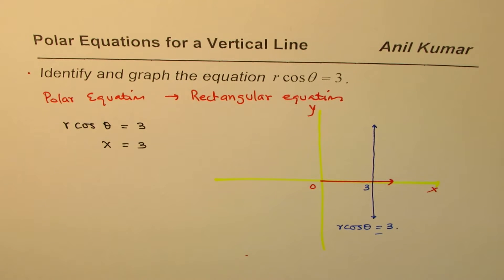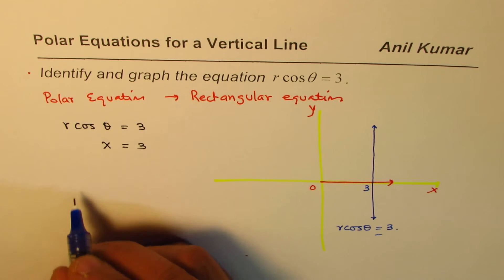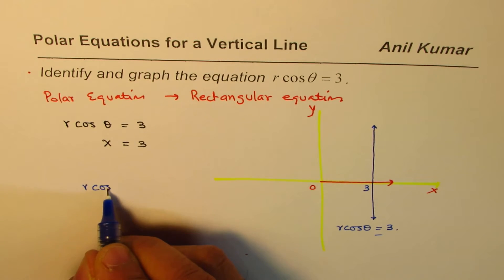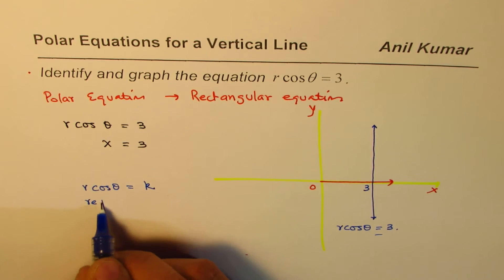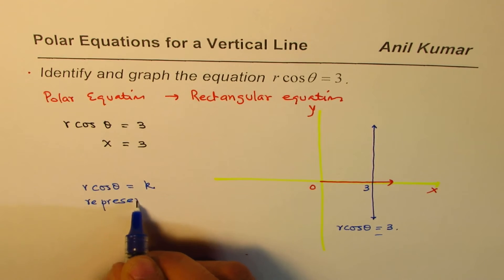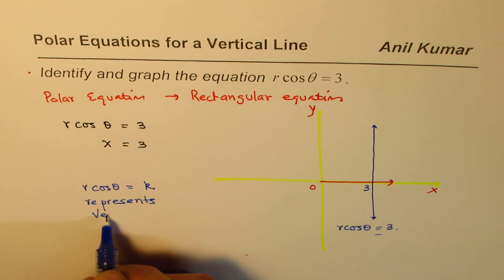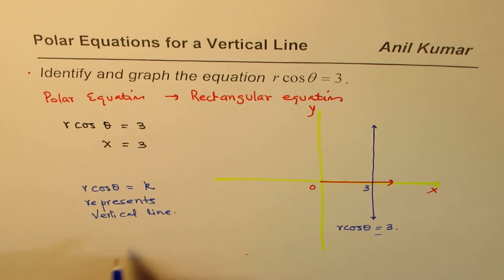So r cos θ equals a constant in general will represent a vertical line. So we can generalize that r cos θ equals any constant k represents vertical line x equals k. That is what we can conclude from this particular video.